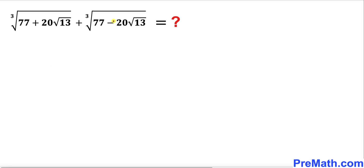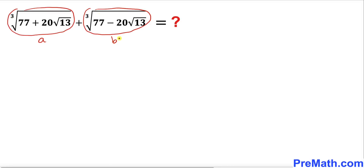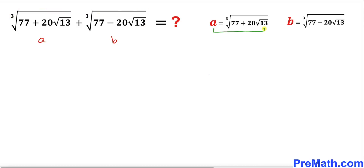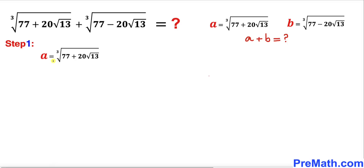Let's go ahead and get started with the solution. The very first thing we are going to do is assume that this first part of this problem we are going to call a, and this second part we are going to call lowercase b. We are going to find the value of a plus b. We know our a equals the cube root of 77 plus 20 times square root of 13.